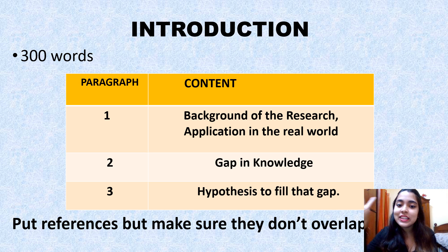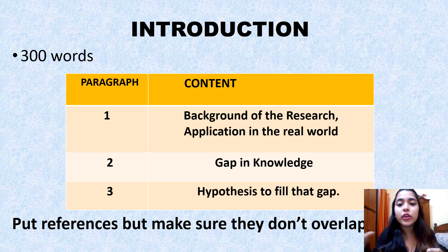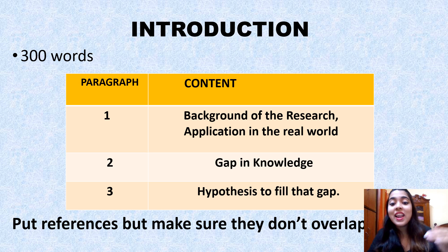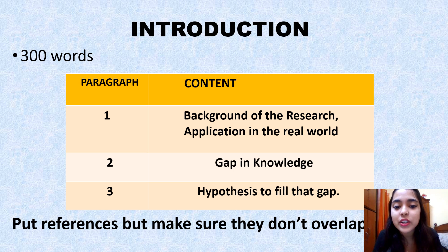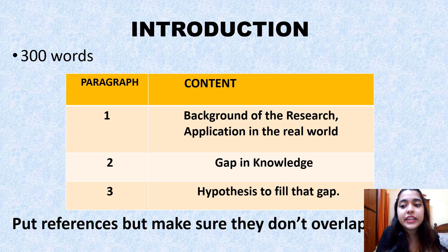The second paragraph is the gap in knowledge — something not known, not verified, or not verified in your country. You are still not talking about your research; you're making the reader think 'this is what is known and this is what is not.' The third paragraph is your hypothesis — why you are doing this research and how your research will fill that gap. Use Vancouver style references throughout, and make the introduction read like a story.